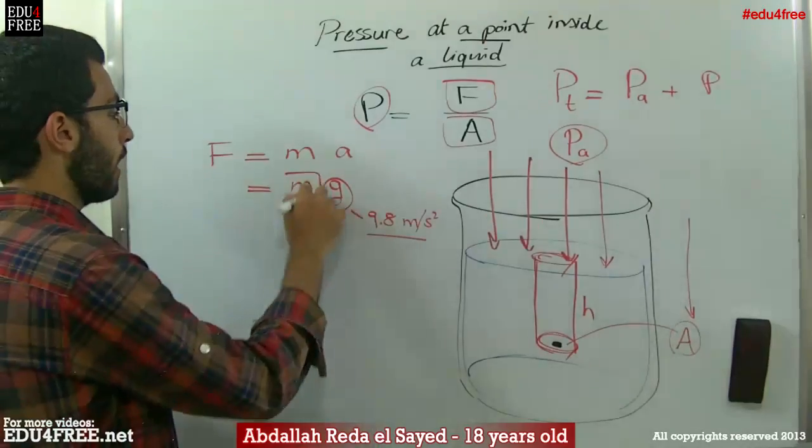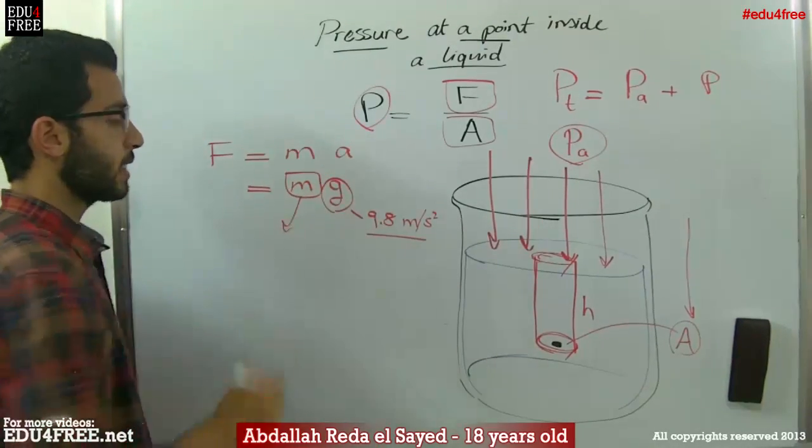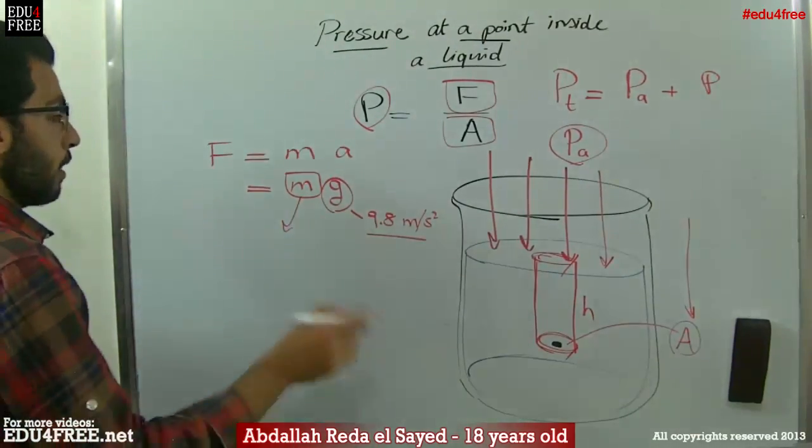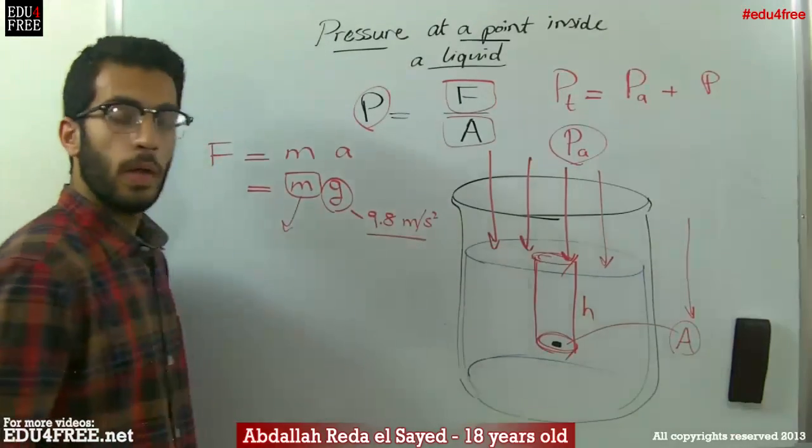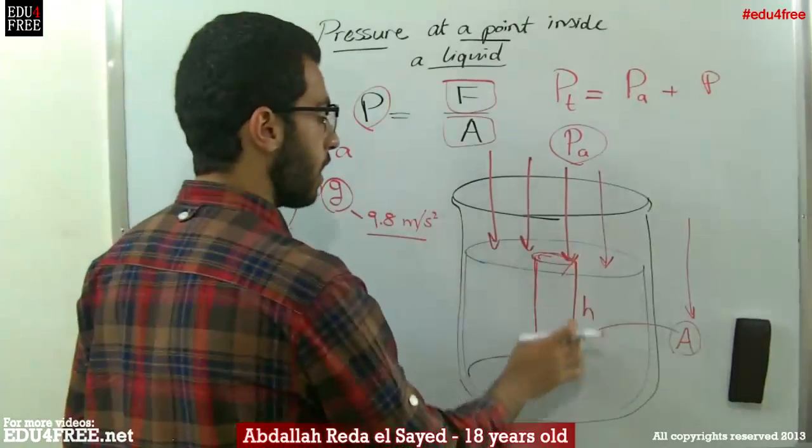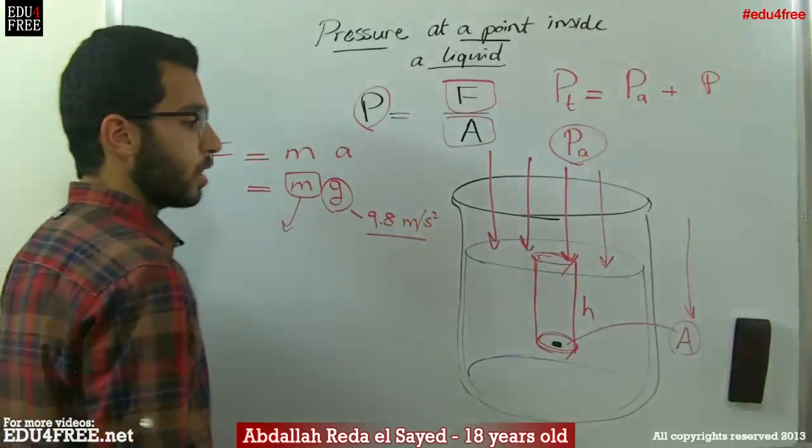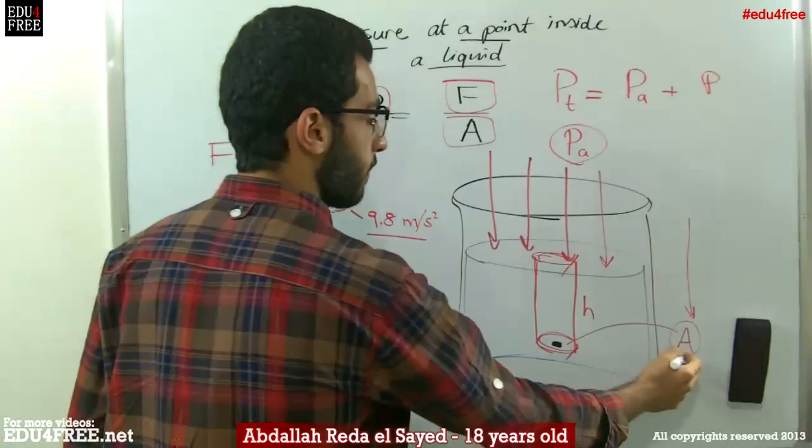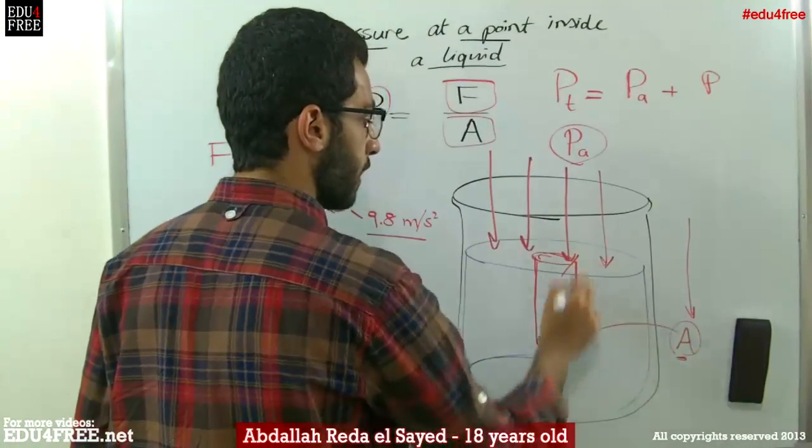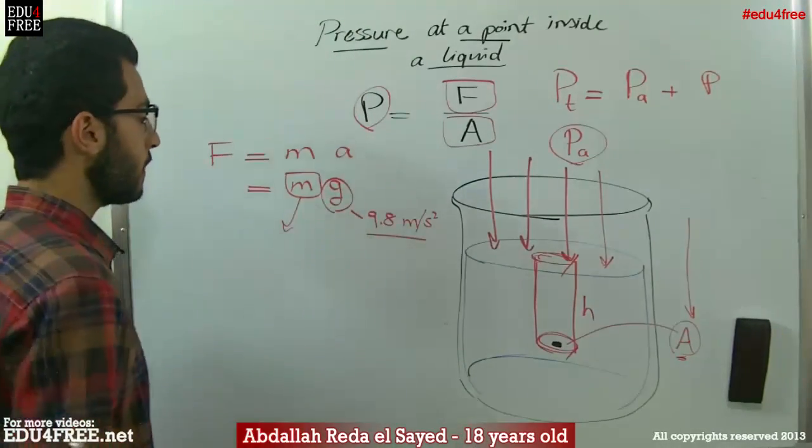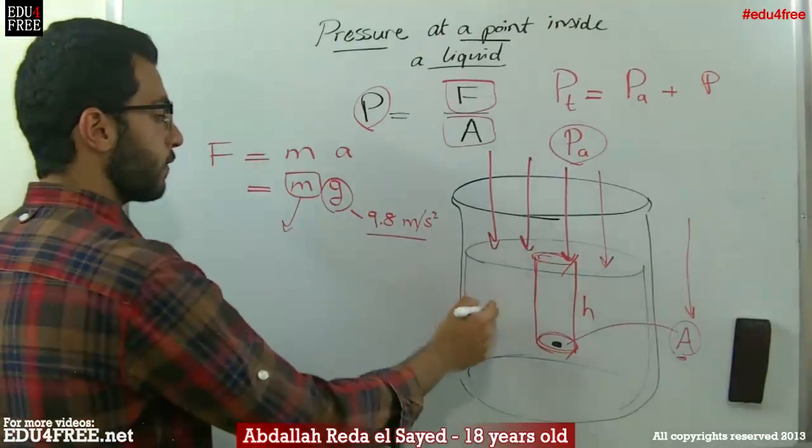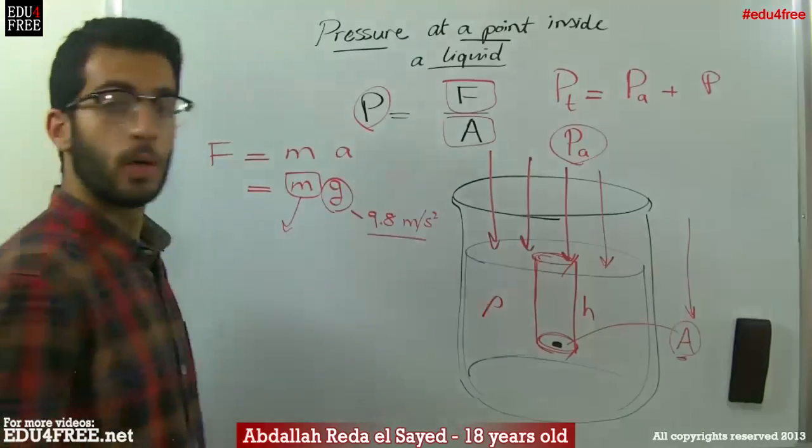Now, we don't know m. So, what does m equal? We have a liquid, and we know the volume of this imaginary cylinder. The volume equals the area multiplied by the height, of course.